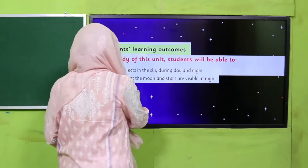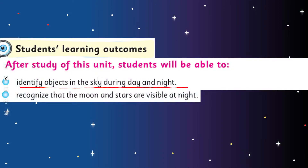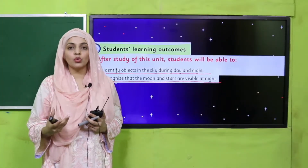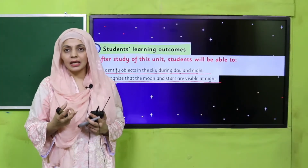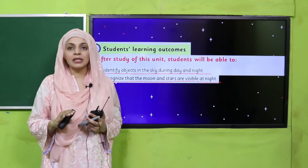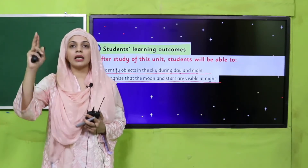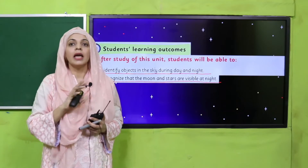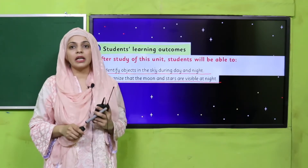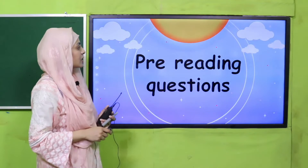In today's lecture, students will be able to identify objects in the sky during day and night, and recognize that the moon and stars are visible at night. Raat ke time jo bhi cheezein asmaan pe maujud hoti hain, bachche unko recognize kar sakenge — yeh chand hai, yeh sitara hai, yeh suraj hai — in tamam cheezon ko is tarike se identify karke name kar sakenge.